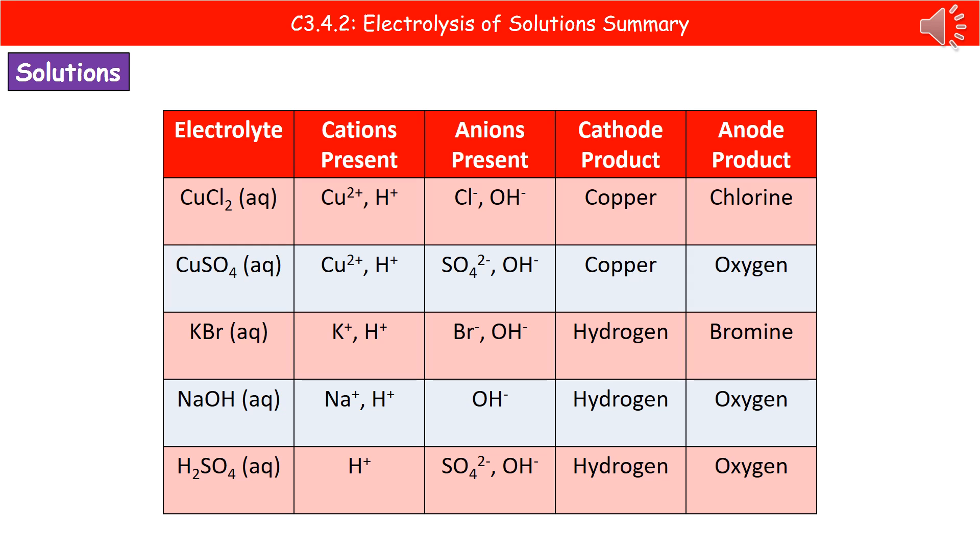Looking at the next example, copper sulfate, CuSO4. The cations include copper, so copper forms at the cathode. For the anions, we have sulfate and hydroxide ions. There's nothing from group seven, so oxygen forms at the anode.